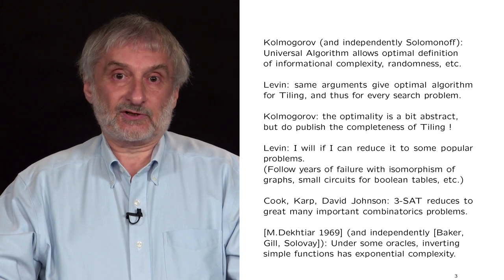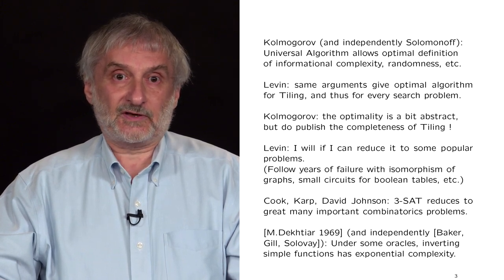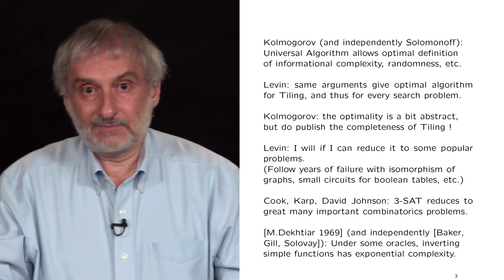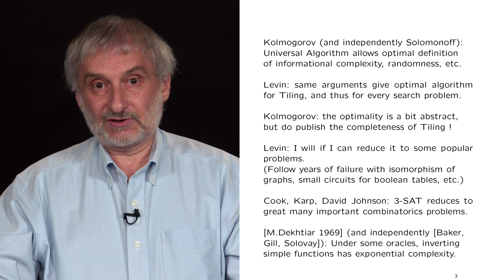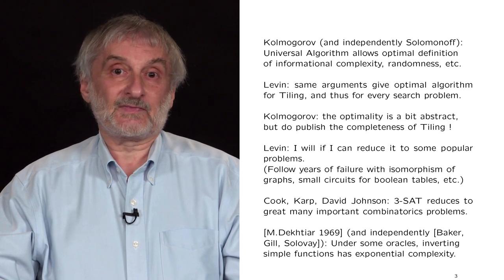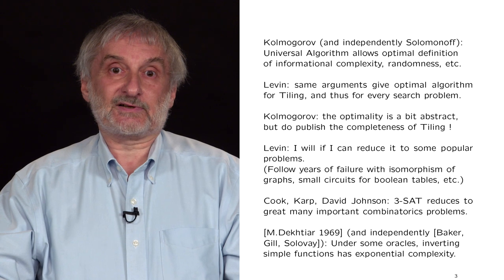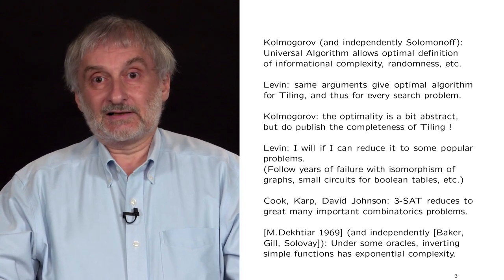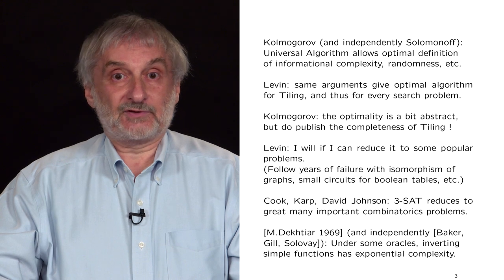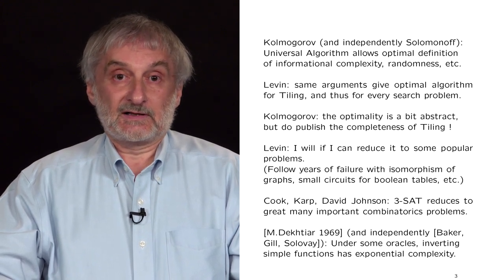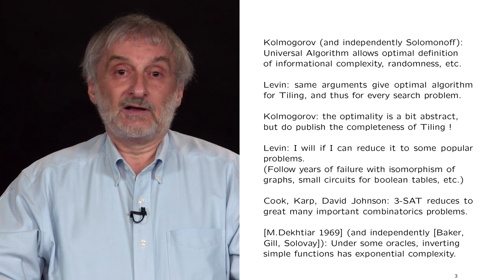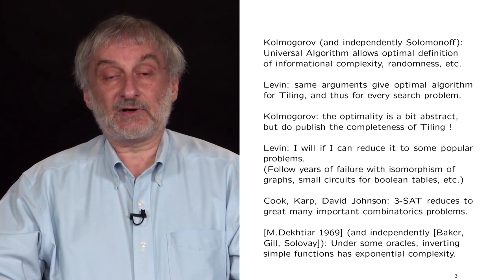Later, I ran into problems with communist authorities, and friends advised me to quickly publish all I have while the access to publishing is not yet closed to me. So I submitted several papers in 1972, including the one about search. Kolmogorov agreed to let me include the optimal search. I guess I must thank the communists for this publication. But the greatest developments by far were going in the United States. Cook, Karp, and David Johnson made a really revolutionary discovery. They found that 3SAT reduces to great many important combinatorics problems. Combinatorics received much attention in the West, and these results became a coup.